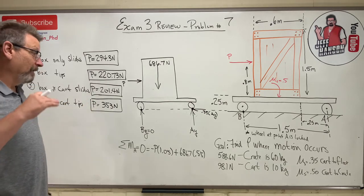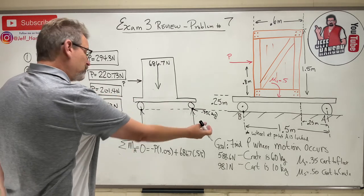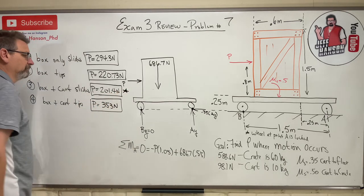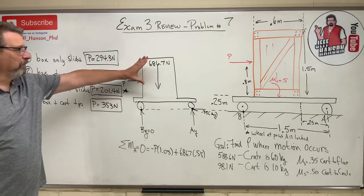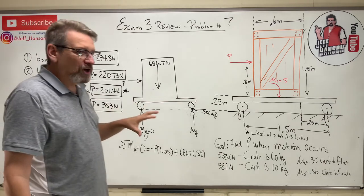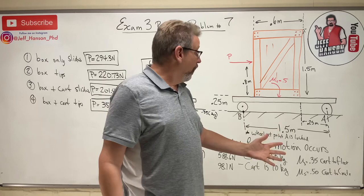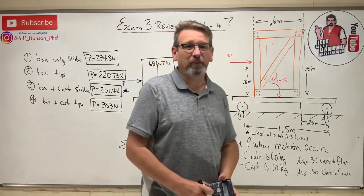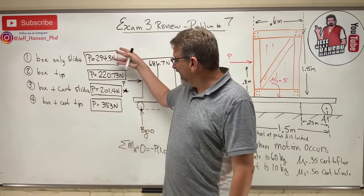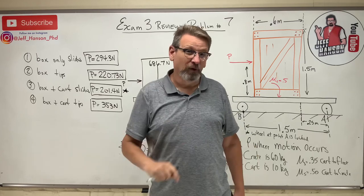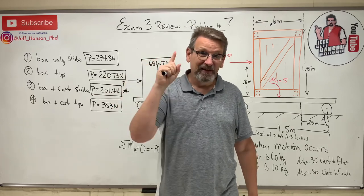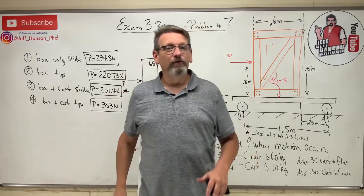353 newtons — that is never going to happen because the whole cart will slide away before that can ever occur. So P where motion occurs is 201.4 newtons — scenario three wins. Love this problem because none of the scenarios are stated in the problem — if you don't know what 'motion' means you'll never solve it correctly. Find the scenarios, test each one, and the smallest P happens first. This has been a slipping and tipping problem — let's make 100!